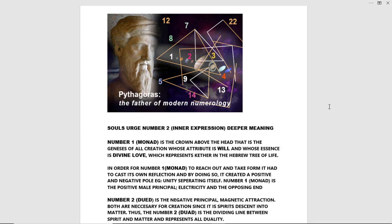The Monad's attribute is will and its essence is divine love, which represents the Kether in the Hebrew Tree of Life. In order for number one, Monad, to reach out and take form, it had to cast its own reflection, and by doing so it created a positive and negative pole. For example, unity separating itself — number one Monad is the positive male principle, electricity.